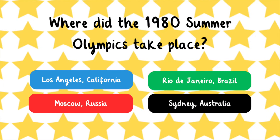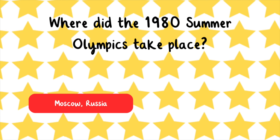Where did the 1980 Summer Olympics take place? Los Angeles, California, Moscow, Russia, Rio de Janeiro, Brazil, or Sydney, Australia? The 1980 Summer Olympics took place in Moscow, Russia.